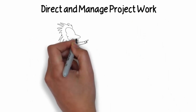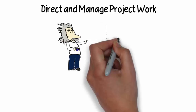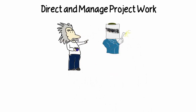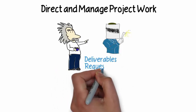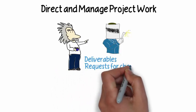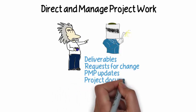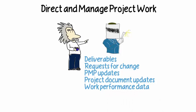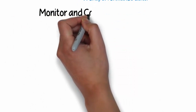From there, you need to direct and manage the project work. Using the plans you've developed, you now put those plans to work. A lot of time is spent on this phase of your project. Your outputs are going to be deliverables, requests for changes, and updates to how the project is going — the plans, documents, and work performance data.